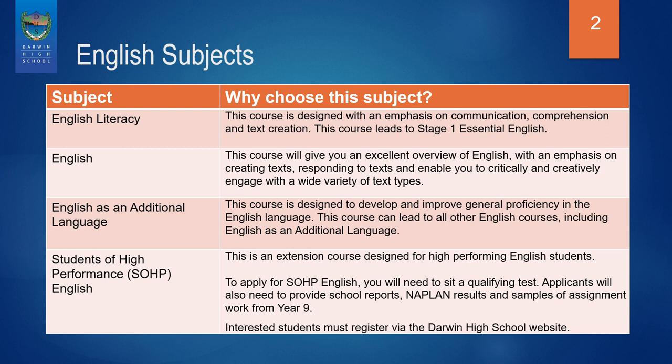English as an Additional Language is a course designed to develop and improve general proficiency in the English language. This course can lead to all other English courses including English as an Additional Language Students of High Performance English. SOP English is an extension course designed for high performing English students. If you're interested in SOP English, please see the Darwin High School website for more information.